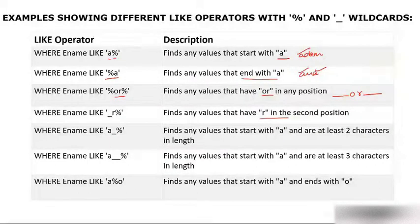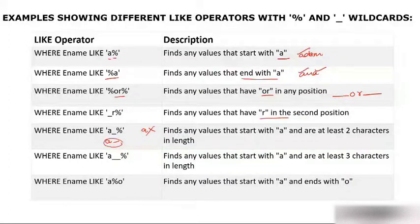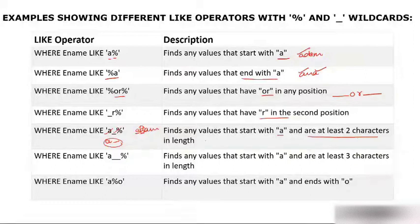WHERE name LIKE 'a_' means the first character must be 'a' and the second character can be anything. If a name is only 'a', you won't get output — there must be at least two characters. For example, 'Adam' would be returned because 'a' is first and 'd' can be any second character.